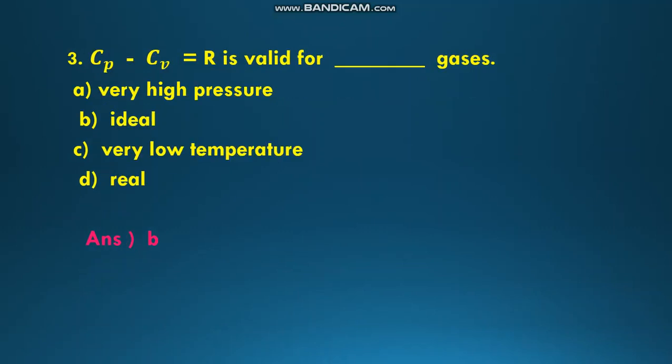The next equation is CP minus CV equal to R is valid for which gases? The options are very high pressure, ideal, very low temperature, or real gases. This equation, heat capacity at constant pressure minus heat capacity at constant volume is equal to R, is valid for ideal gases, so the answer is B.